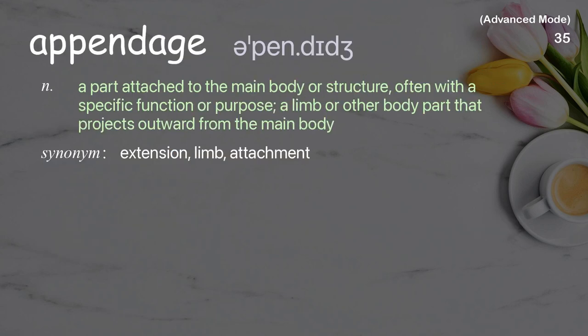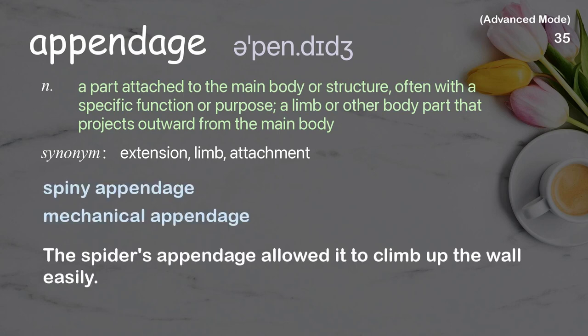Appendage: A part attached to the main body or structure, often with a specific function or purpose; a limb or other body part that projects outward from the main body. Examples: spiny appendage, mechanical appendage. The spider's appendage allowed it to climb up the wall easily.